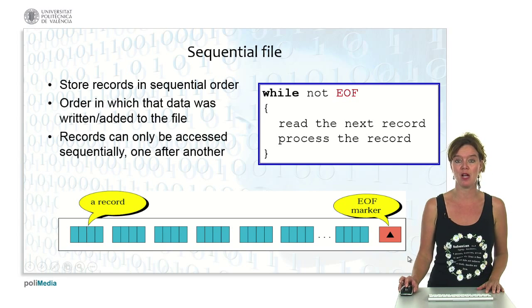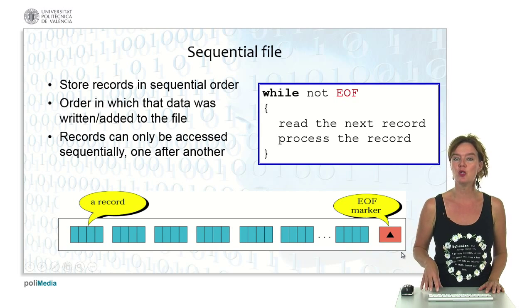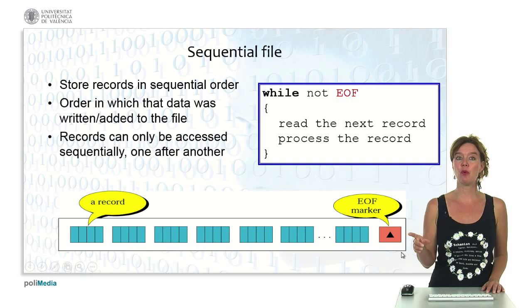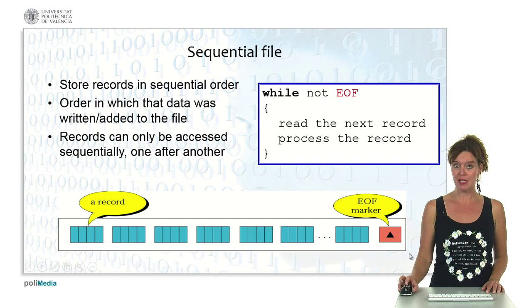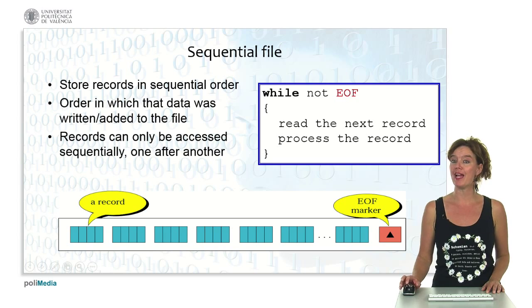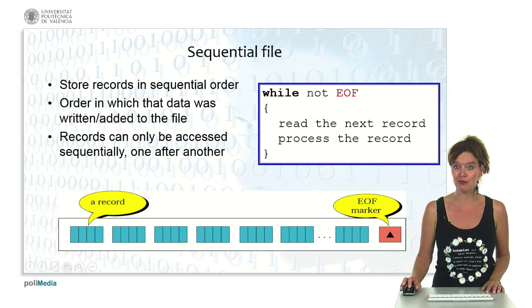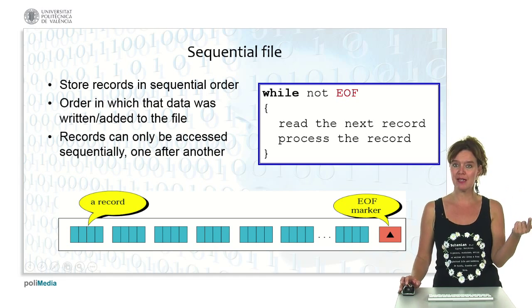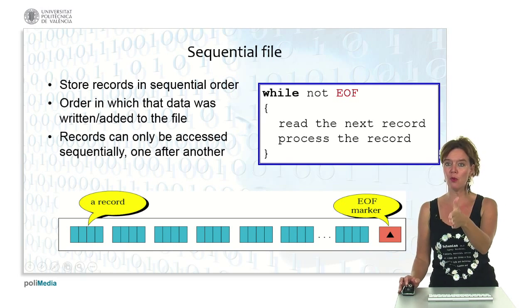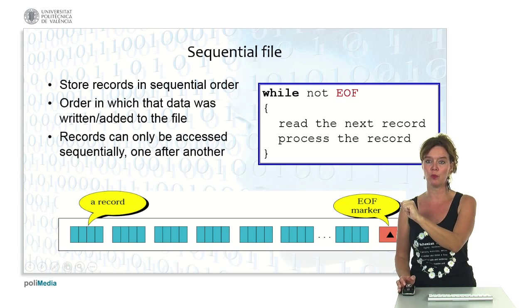As you can see here on the slide, an EOF marker indicates this is the end of the file. There are no more records to be found after that. To process a sequential file, you can use a while loop: while we have not reached the end of the file, read the next record and process it. That's how we go through the whole file in a sequential way.